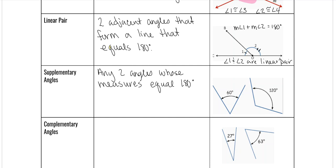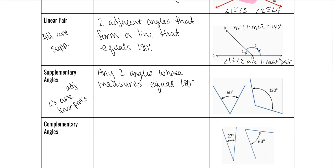Just so you understand: all linear pairs are supplementary. We use SUPP to shorten that word. Supplementary angles — only some are adjacent, and we use ADJ to shorten it. Some adjacent angles are linear pairs. Only adjacent angles are linear pairs for the supplementaries. A lot of kids use those two interchangeably, but that's not true. All linear pairs are supplementary, but not all supplementaries are linear pairs. So 60 plus 120 equals 180 — those are supplementary angles.